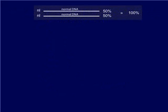This diagram illustrates how these mutations affect the function of the biotinidase enzyme. Each of us has two normal genes, illustrated by the normal DNA line, and each of these genes accounts for about 50 percent of our total biotinidase enzyme activity.